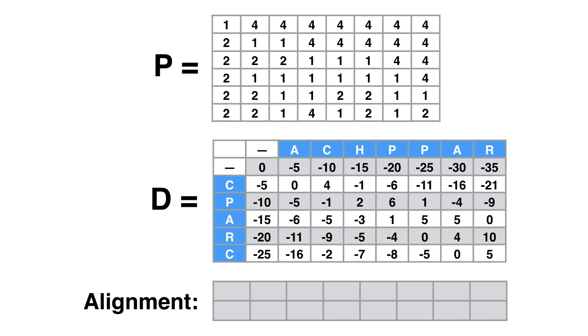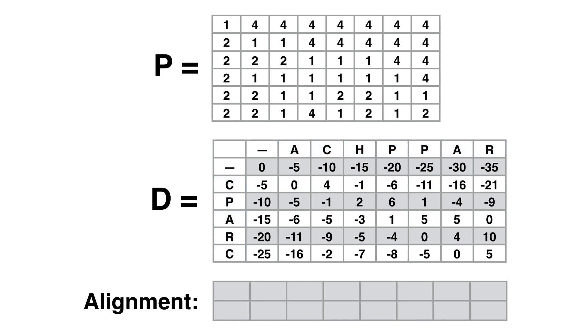We construct the global alignment of CPARC and ACHPPAR backwards, step by step, using the matrix P of pointers as a lookup table. We start from the rightmost bottom corner of D, which in this case is cell (5,7), and look up the (5,7) entry in P. Since the (5,7) entry in P is 2, we move one position up and align C with a gap symbol. Since we are now in position (4,7) in D, we look up entry (4,7) in P. Since the (4,7) entry in P is 1, we move one position across the diagonal and align R with R.